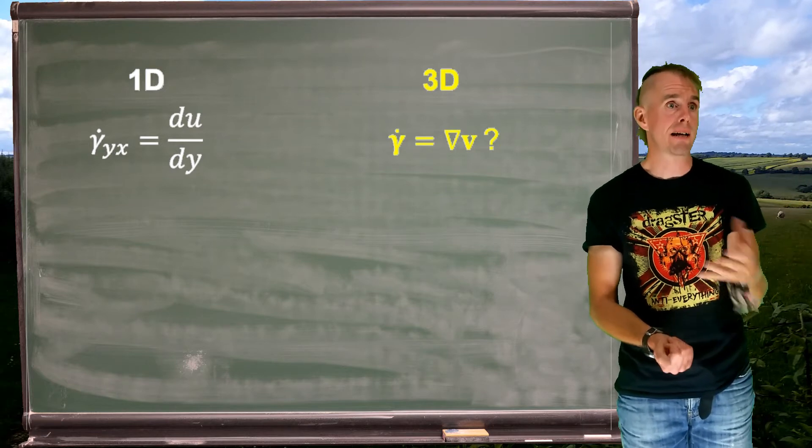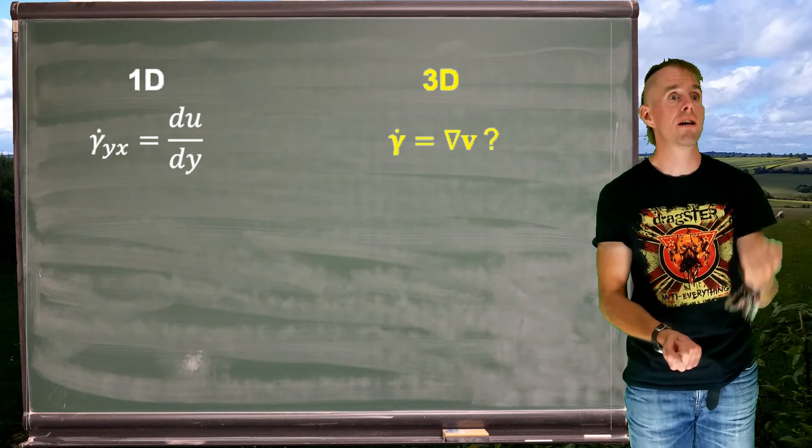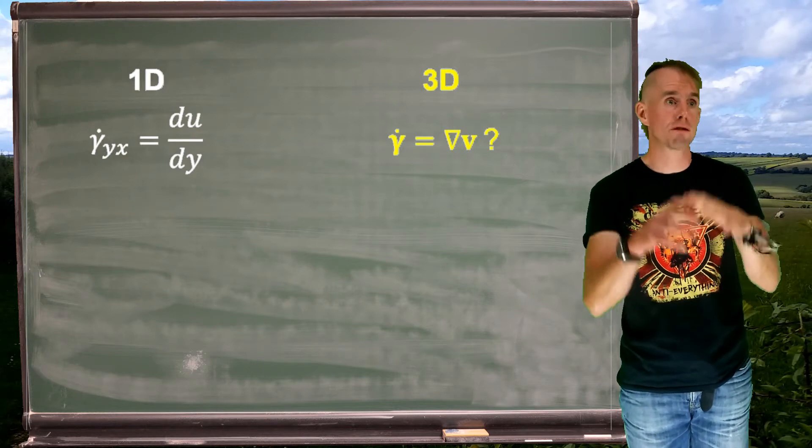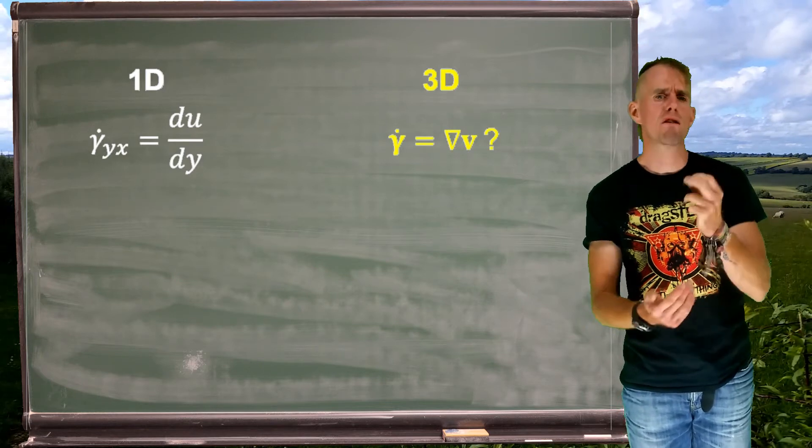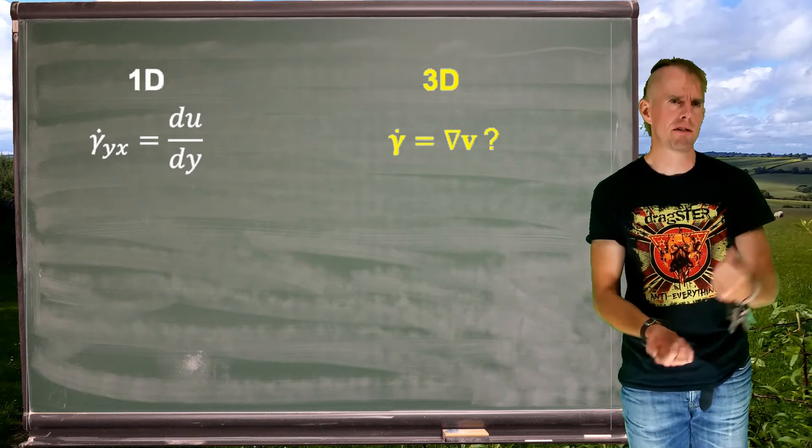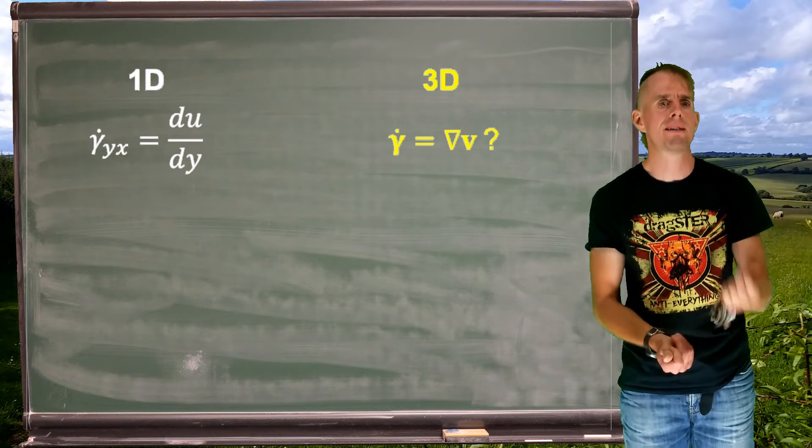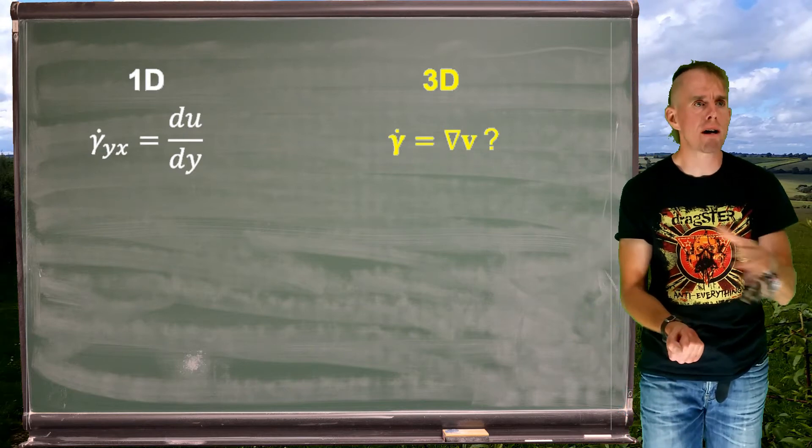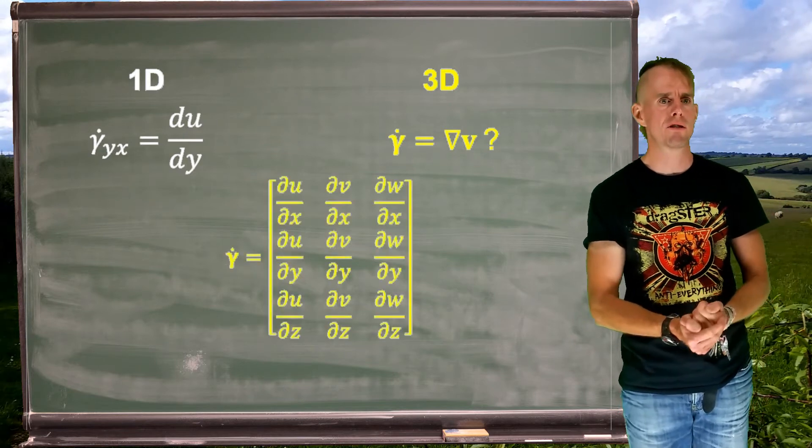Grad of a scalar, scalar p for pressure, dp dx, dp dy, dp dz, the result would be a vector. Grad of v, where v is already a vector and has three pieces of information associated with it, will therefore be a tensor. So let's write out that tensor and see what it looks like.